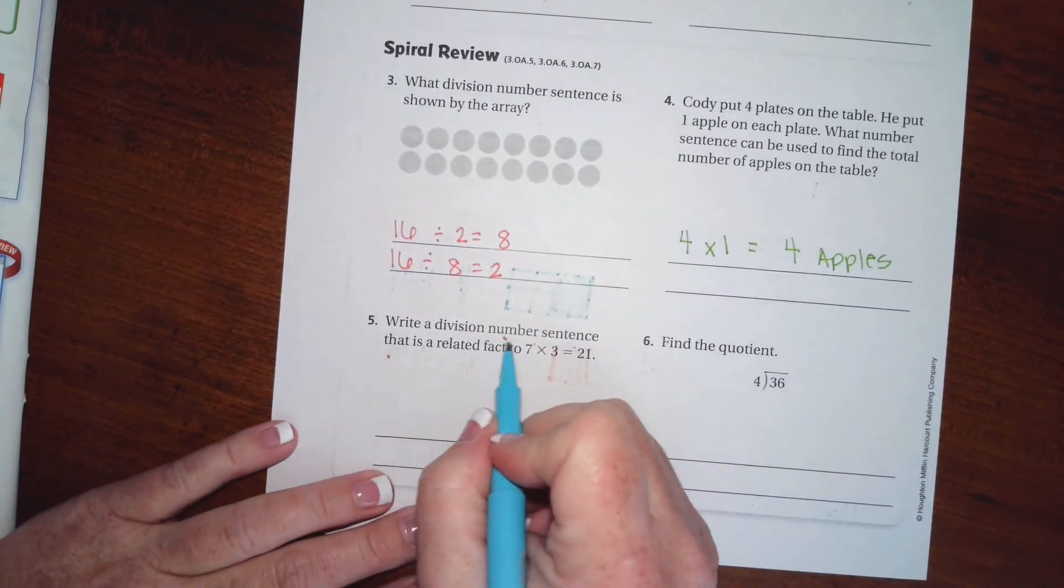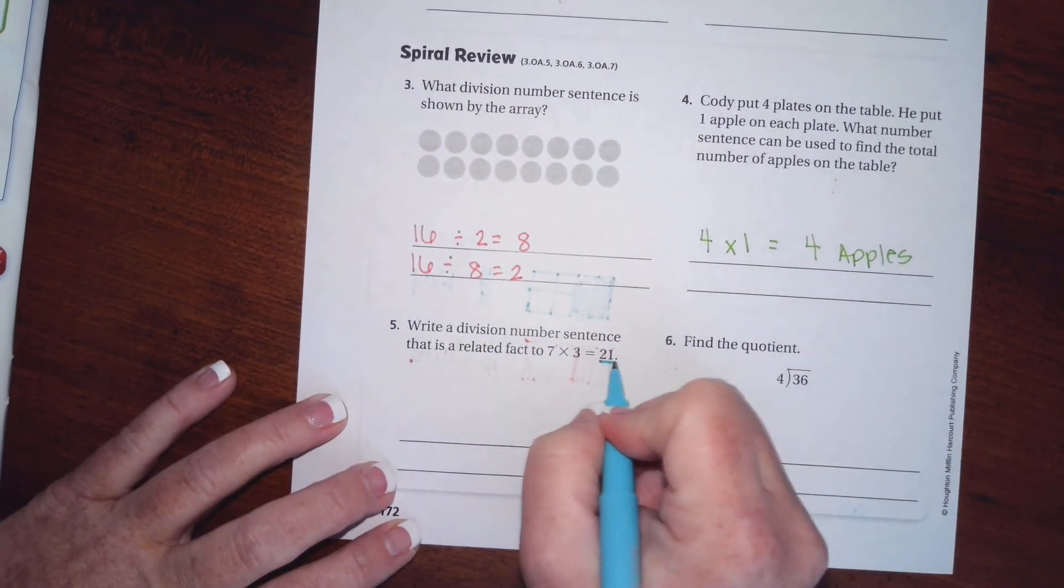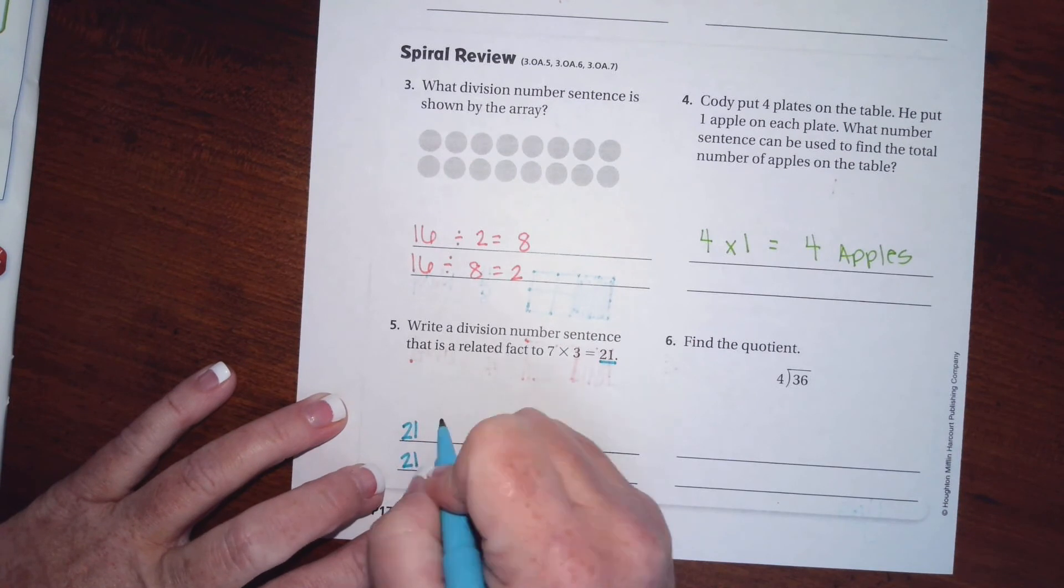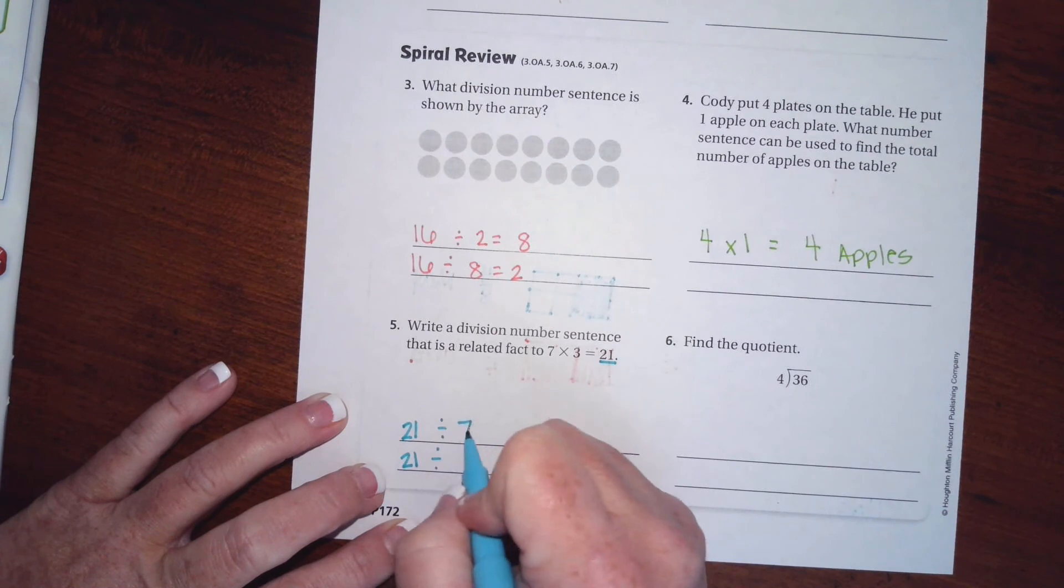Write a division number sentence that is related to this fact. We're going to start with the answer, and then we're going to divide. So we can divide by seven and then get three, or we can divide by three and then get seven. Love those fact families.